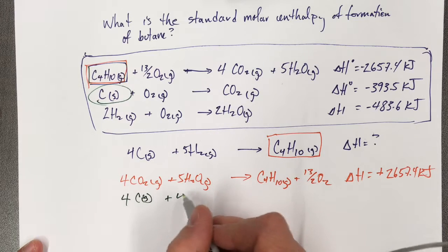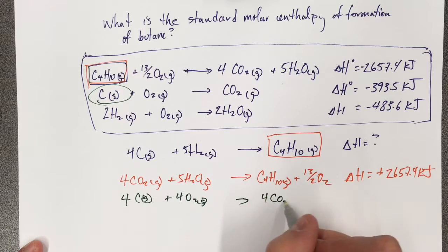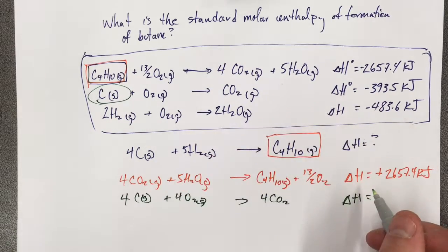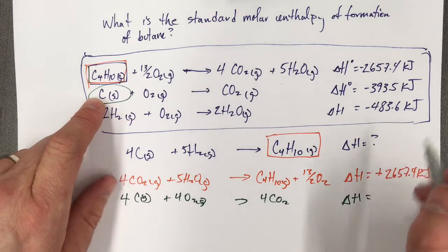4 carbon solid plus 4 oxygen gas are going to make 4 carbon dioxide. But if I'm going to do that, I need to multiply the energy by 4, because I've got 4 moles of this.